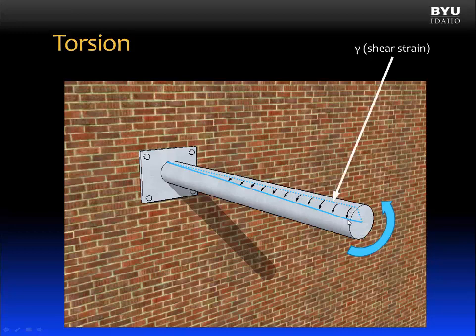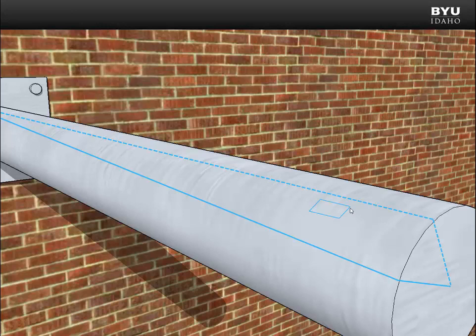Now, this deflection is a shear strain-related deflection. Let's look more closely. If we identify a rectangular element on the surface of the shaft prior to applying the load, then when we apply the torque, that rectangle will deform.